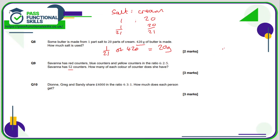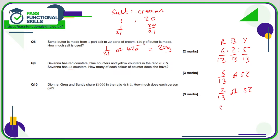Question 9: split 52 in the ratio 6 to 2 to 5 — that's red to blue to yellow. The denominator is 6 plus 2 plus 5, which is 13. So 6/13 are red, 2/13 are blue, and 5/13 are yellow. To find each: 52 divided by 13 times 6 is 24 — red is 24. 52 divided by 13 times 2 is 8 — blue is 8.